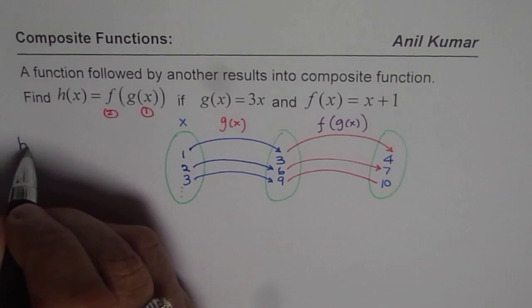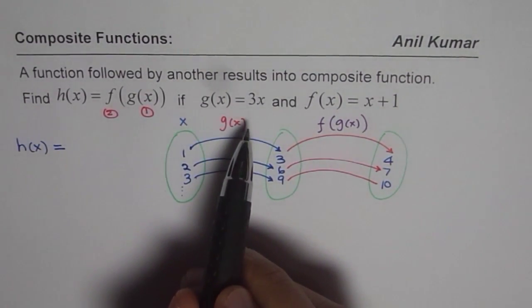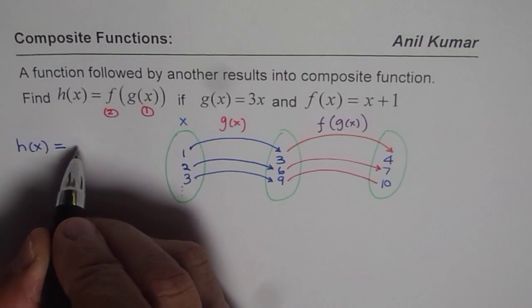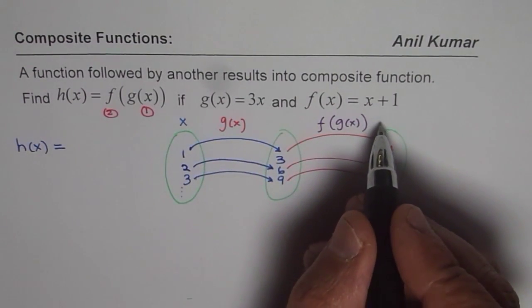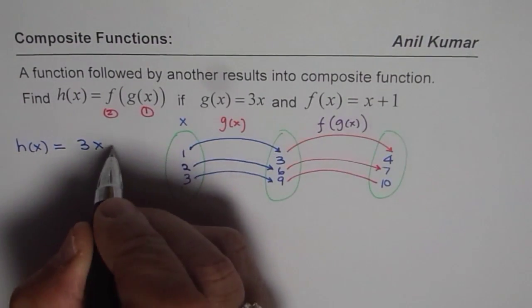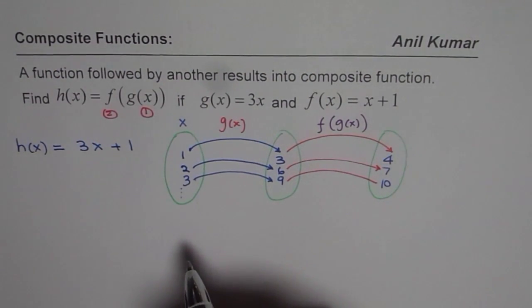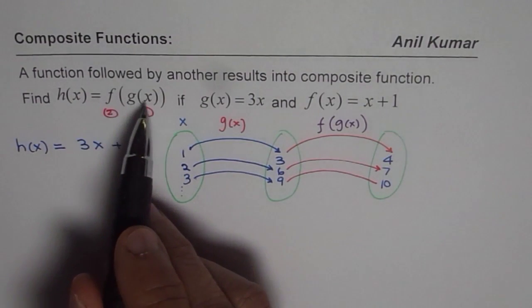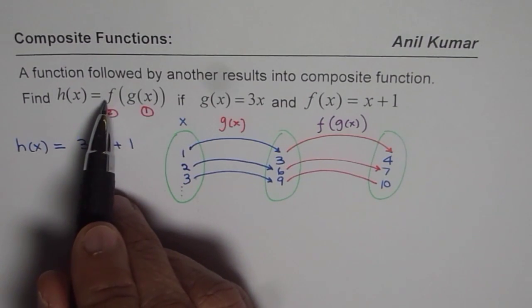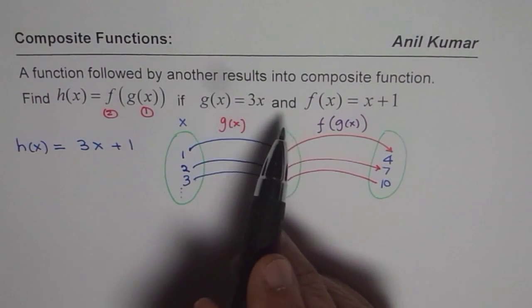We can say h(x) equals the first operation being performed here is times 3. The first operation is times 3, and then on that operation you add 1. So you can do x times 3 which is 3x, and then you add 1 to it. That is how you can get from the very basic definition that f(g(x)) is the g(x) operation followed by the f(x) operation.